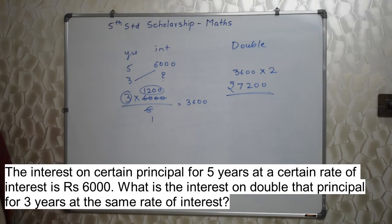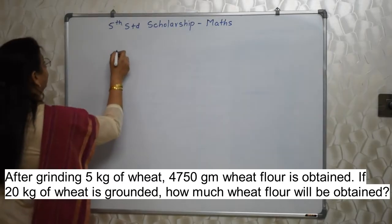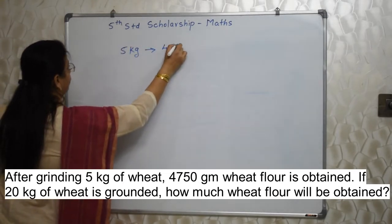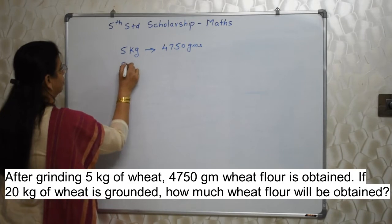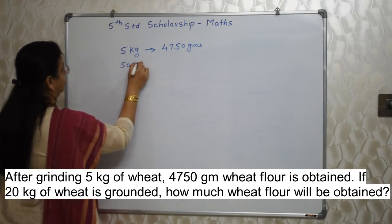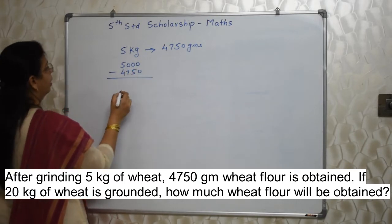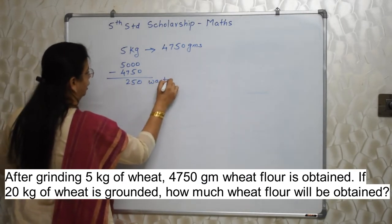Let's move ahead. After grinding 5 kg of wheat, 4750 gram wheat flour is obtained. If 20 kg of wheat is ground, how much wheat flour will be obtained? 5 kg wheat gives 4750 grams of flour. Let's convert everything to grams. So from 5000 grams of wheat, we get 4750 grams of flour — meaning 250 grams is wastage.